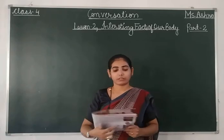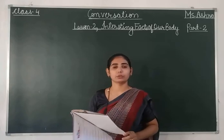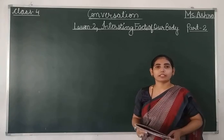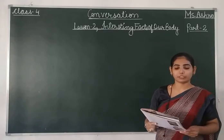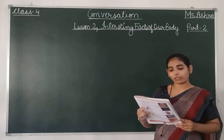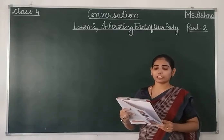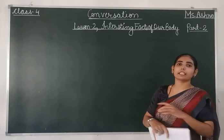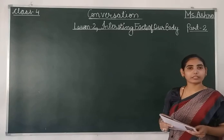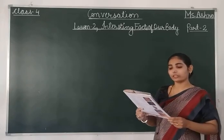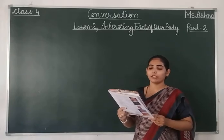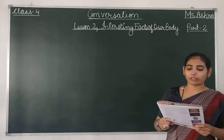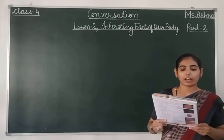Open your book on page number 4, lesson 2. Question number 1 was: how many bones does the adult human body have? An adult human body has 206 bones. Number 2 was: how many bones are there in our hands including the wrist? Including the wrist, there are 54 bones. Number 3 was: how many bones is the human face made up of? The answer was 14 bones.